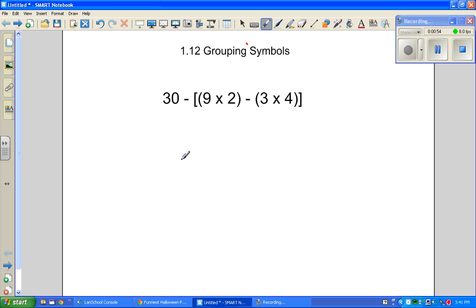Alright, so to solve this one, we're going to start at the very beginning. We look at the parentheses. The brackets are this main part way over here. We're actually going to look a little bit smaller just at the 9 times 2. 9 times 2 is 18. Then we're going to look over here at the next one. We need to do that before we do anything else. 3 times 4 is 12.